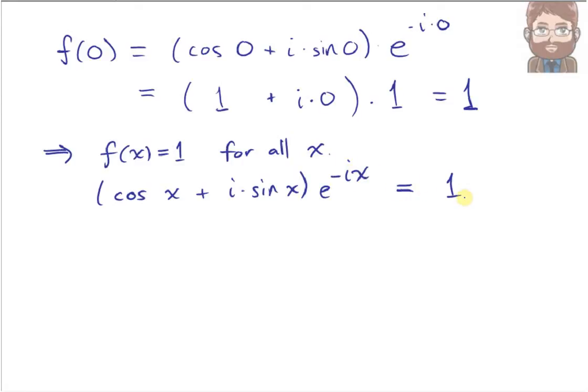We'll simplify this by multiplying both sides by e to the ix. We'll notice that e to the negative ix and e to the ix multiply to give you 1. So we are left with cosine x plus i sine x equals e to the ix. And that completes the proof of Euler's formula.